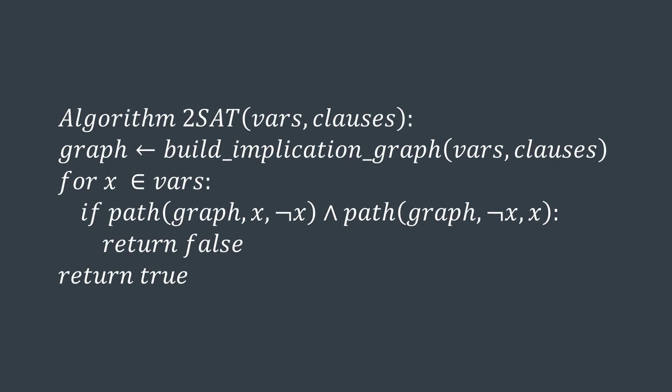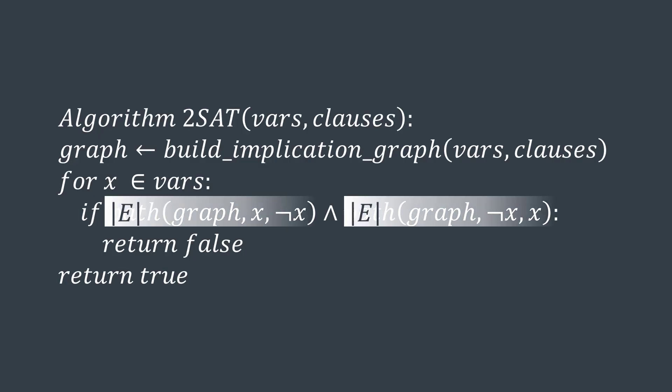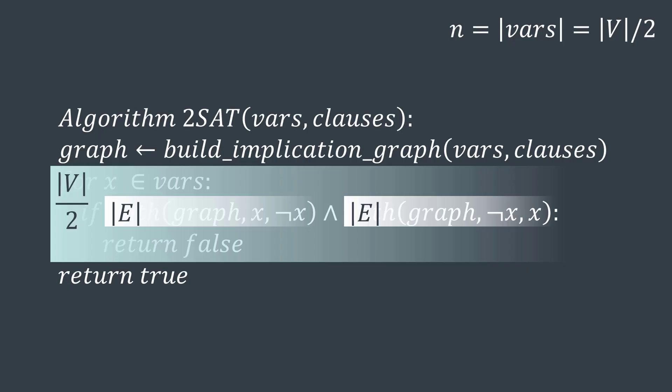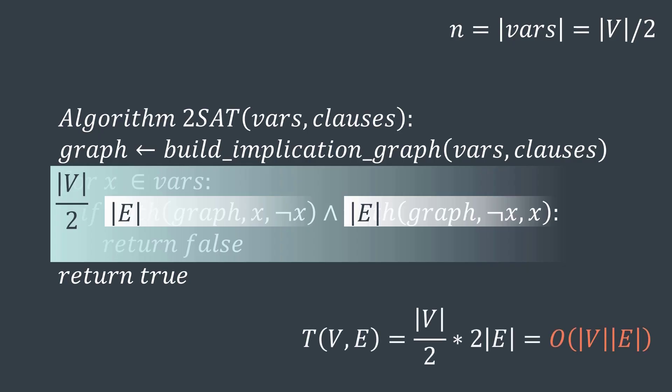So this is our algorithm: after we build the implication graph, for each variable x, if we find paths from x to NOT x and from NOT x to x, we say the formula is not satisfiable and return false. If no variable has this problem, we return true. Checking if there is a path from one vertex to another requires a single DFS or BFS traversal costing O(|E|). We do it twice per variable, so 2|E| per variable, and with n variables, we get a total time complexity of O(n × |E|).